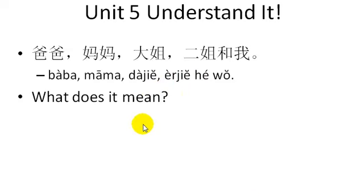You know that 姐 means sister. By now you should know that culturally, Chinese look at family quite differently than we do. For example, they have separate words for big brother, little brother, big sister, and little sister. The only reason why a language would differentiate between big brother and little brother and big sister and little sister is if it was important to the family structure.